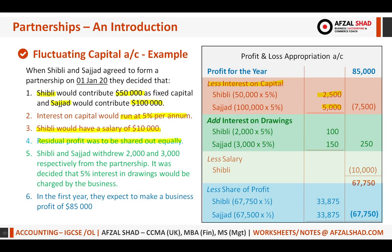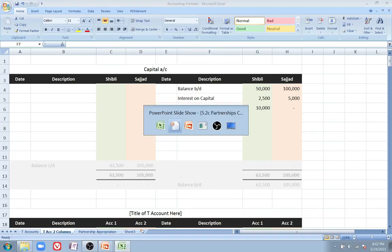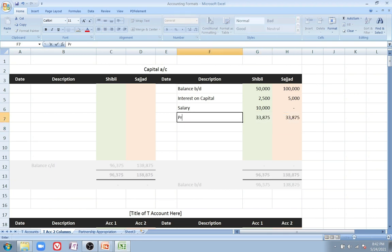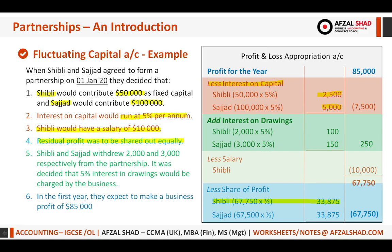Point four: residual profit was to be shared equally. We already calculated the residual profit share — Shibli gets 33,875 and Sajad gets 33,875. Since profit is added to capital, we place 33,875 on the credit side for both partners, referencing the profit and loss appropriation account.